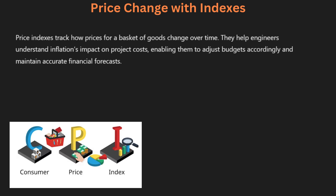Price indexes are tools used to measure changes in the price level of goods and services over time. They help us understand how inflation affects different sectors of the economy. There are several types of price indexes, including the Consumer Price Index (CPI) and the Producer Price Index (PPI). The CPI measures the average change over time in prices paid by consumers for a basket of goods and services. The PPI measures price changes from the perspective of the seller. Composite indexes combine various prices to give a broader view of inflation.